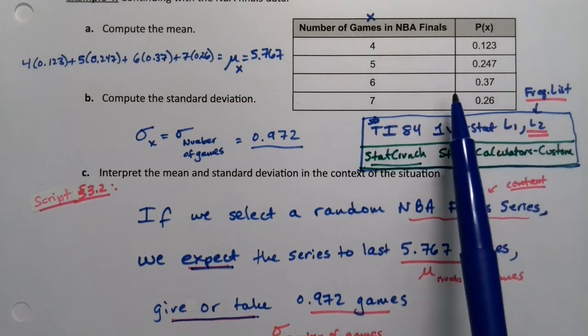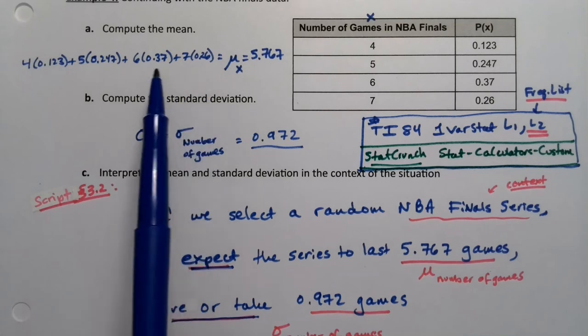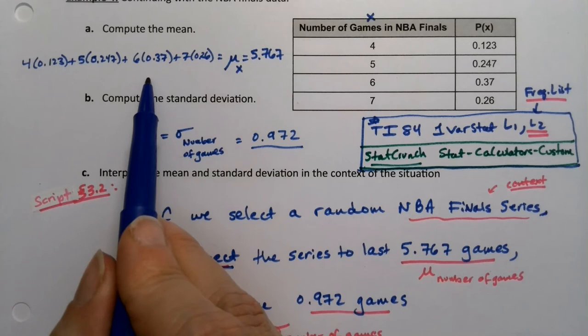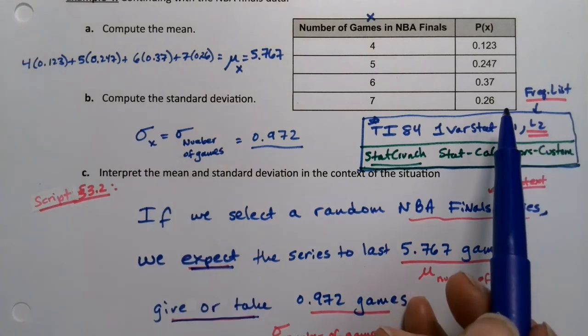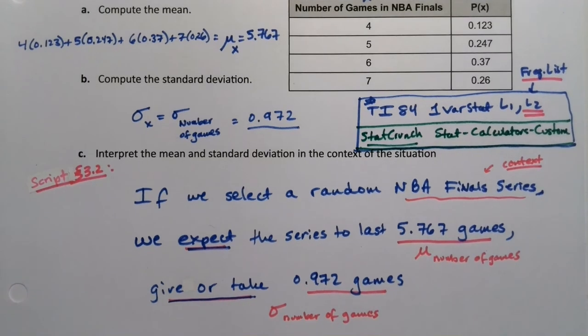And this is the formula for weighted means that we learned back in that section. It's just that in that section, we say divide by the sum of the frequencies. But in this case, the sum of the frequencies will always be one, so it's even easier than that. So this is very, very similar to stuff we've already learned, which makes this section kind of fun.